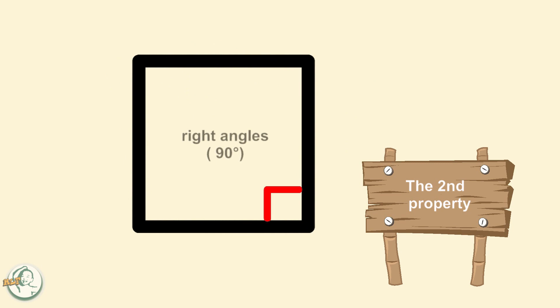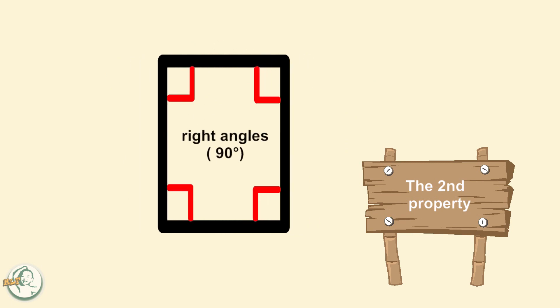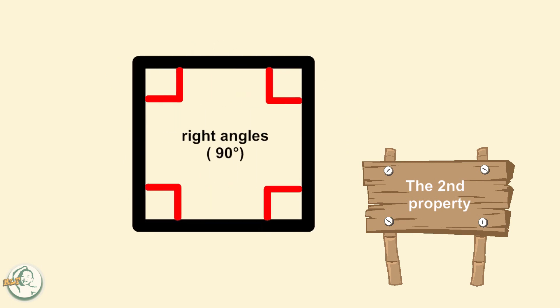The second property is that all four angles of a square are right angles. A right angle is an angle that measures exactly 90 degrees.